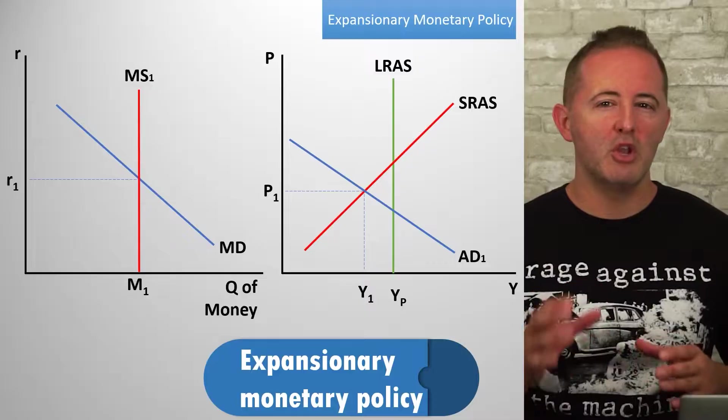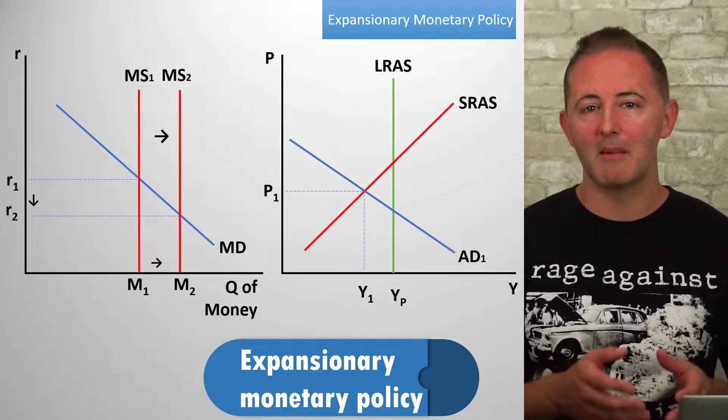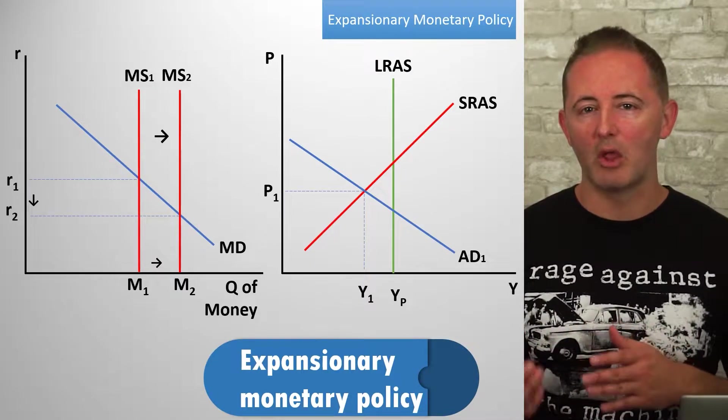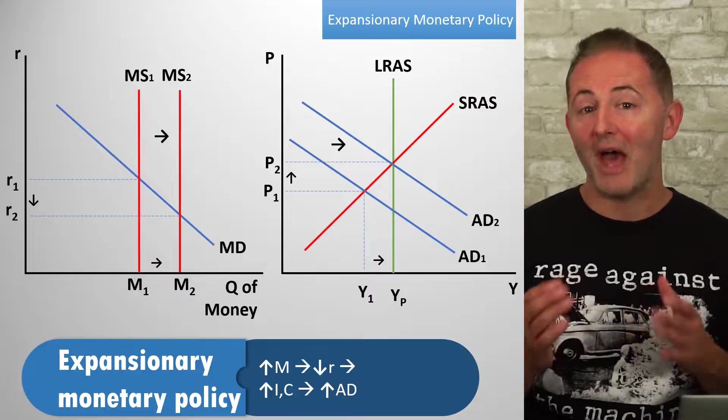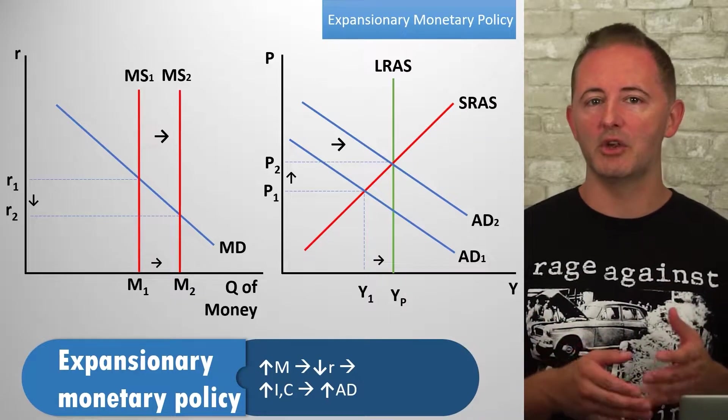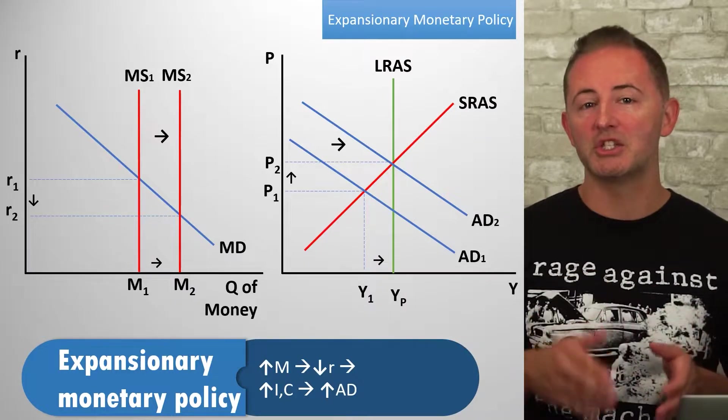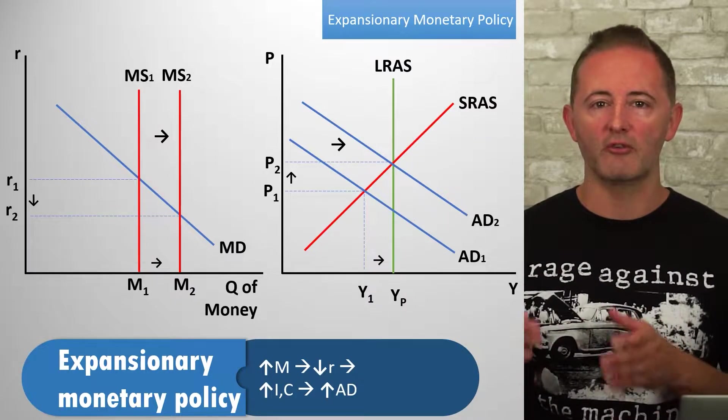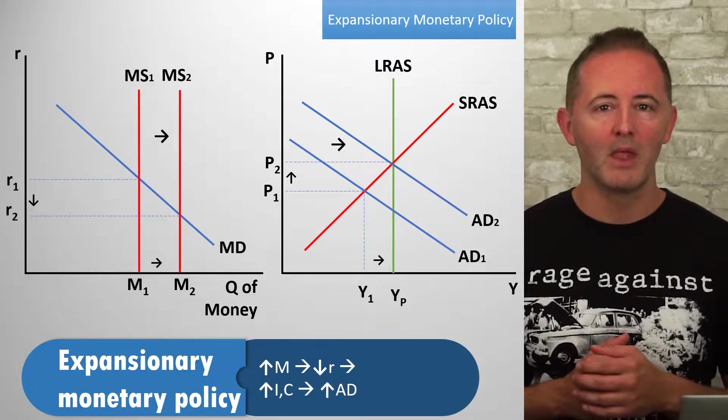Both policies are used similarly and they affect AD, price level, and output similarly. But it turns out that the policies affect interest rates differently. Starting with monetary policy: expansionary monetary policy shifts the MS curve right, lowering the nominal interest rate, and that's what leads to the increase in consumer and investment spending that shifts the AD curve to the right on the AD-AS model.